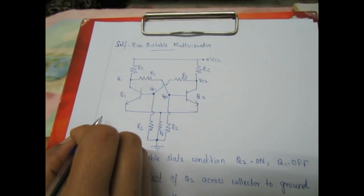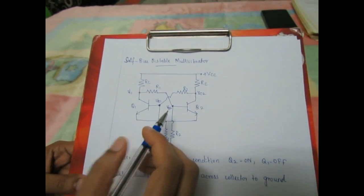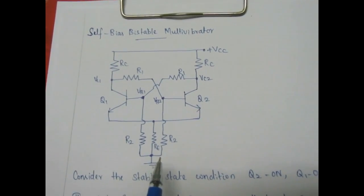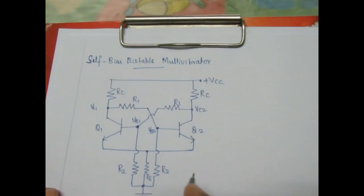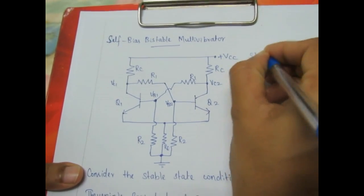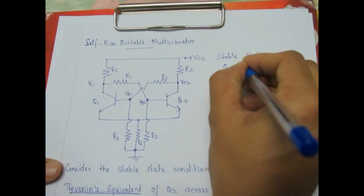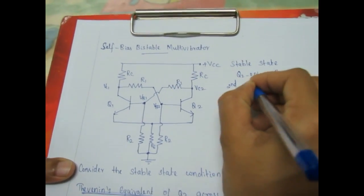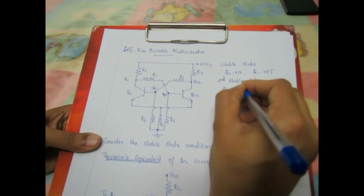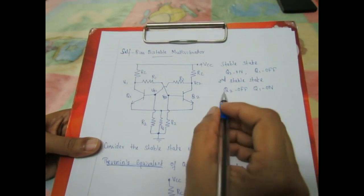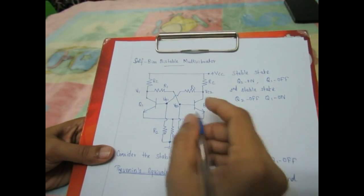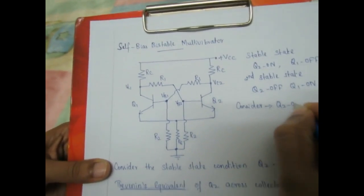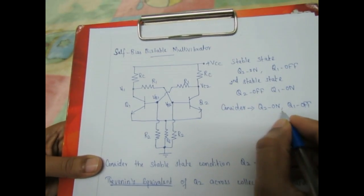In this video we are going to see how to find the stable state voltages and currents in a self-biased bistable multivibrator circuit. We know that a bistable multivibrator circuit has two stable states: one stable state condition is Q2 is ON and Q1 is OFF; the other stable state condition is Q2 is OFF and Q1 is ON. We are going to consider Q2 ON and Q1 OFF.